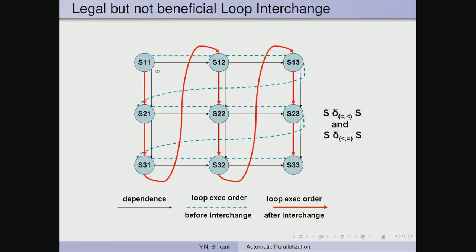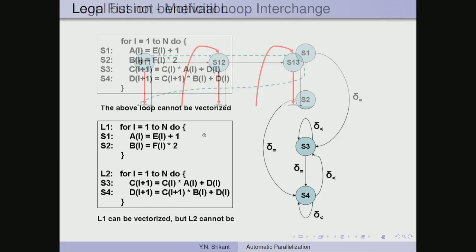If dependences exist in both directions, loop interchange is legal but gives no benefit since we cannot run any loop in parallel when there are dependences in both directions.